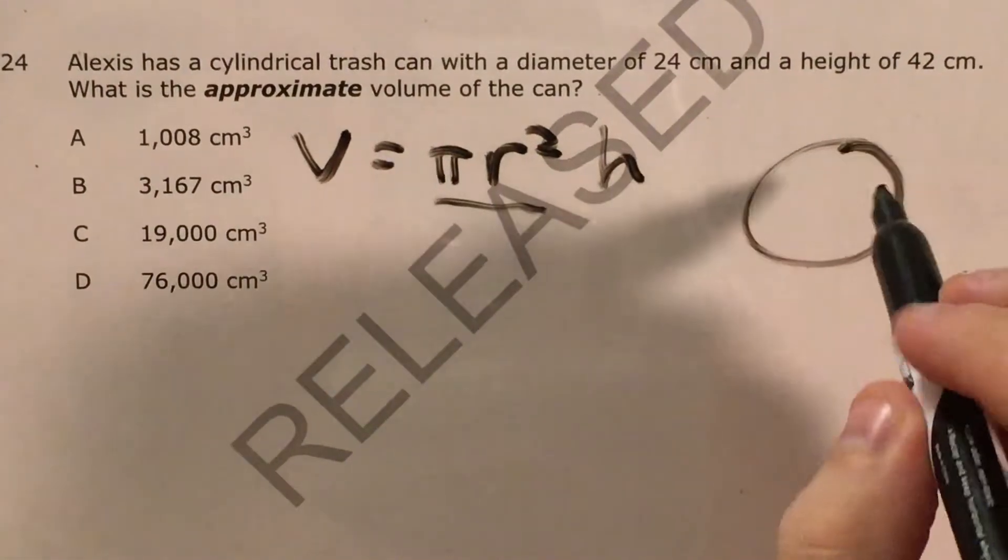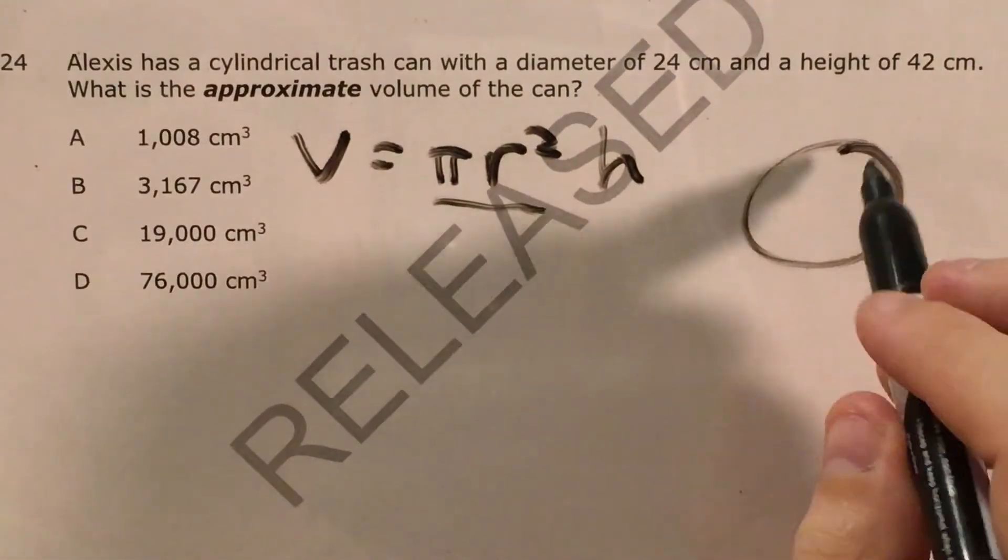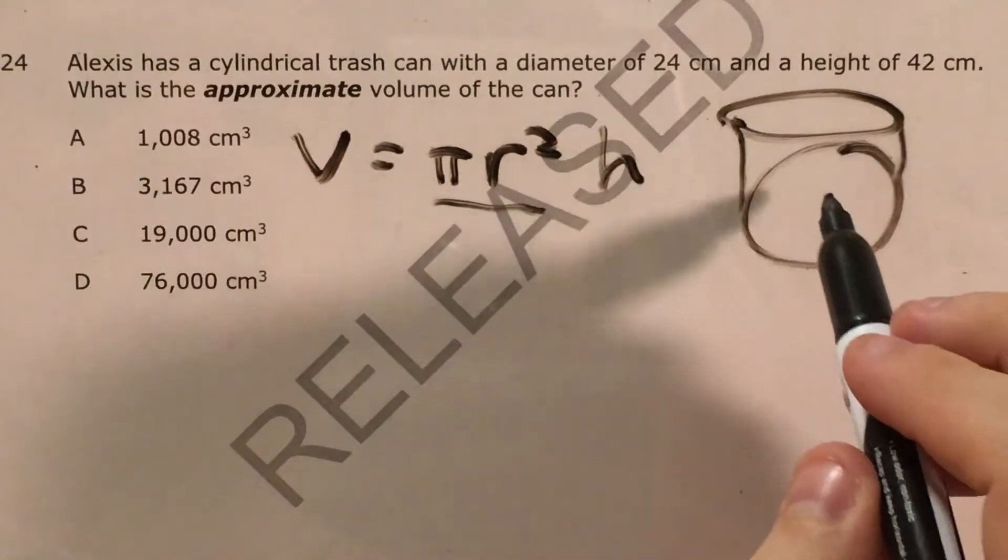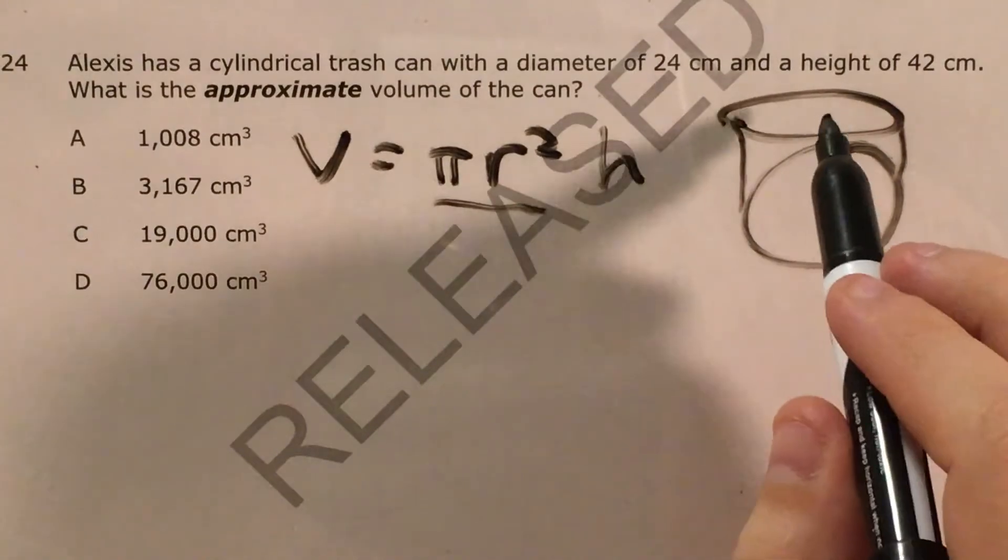Now if we think about a circle, pi r squared is the area of this circle, and then if we have a cylinder, then the height of that cylinder is just the distance from one circle to the other.